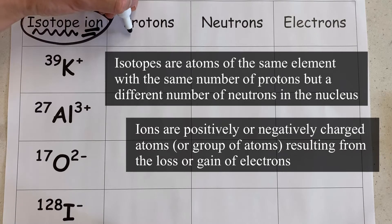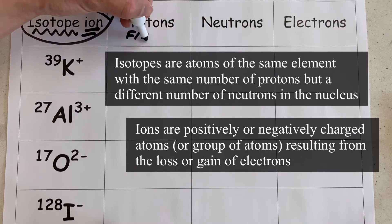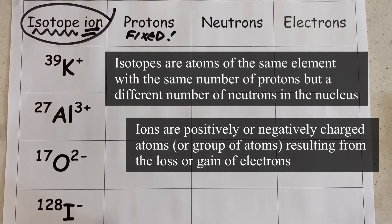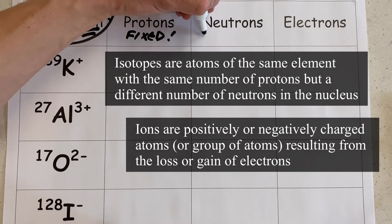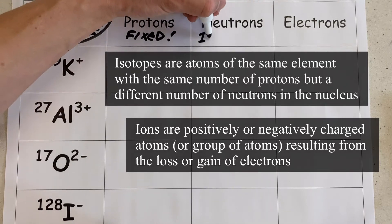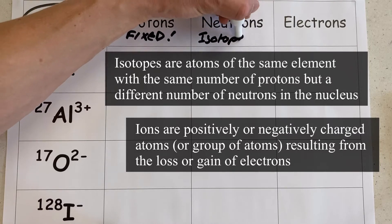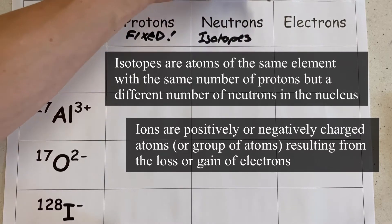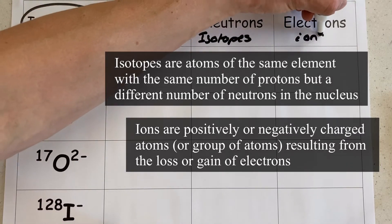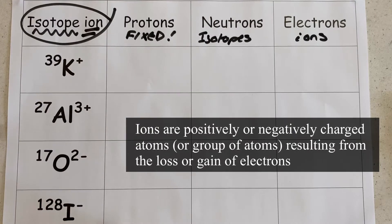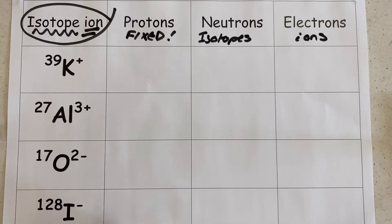When we're looking at our subatomic particles we need to remember that the number of protons is fixed for a particular element. If we vary the number of neutrons then we're going to create different isotopes of that element. And if we vary the number of electrons we're going to create different ions of that element.